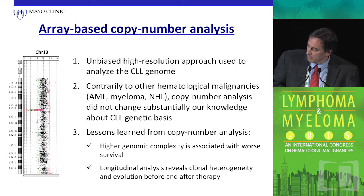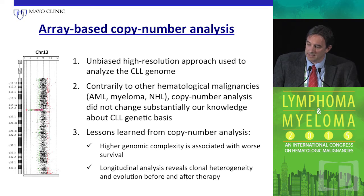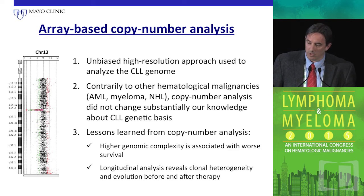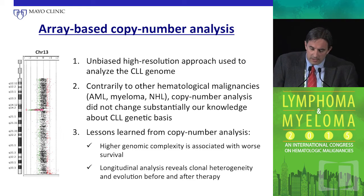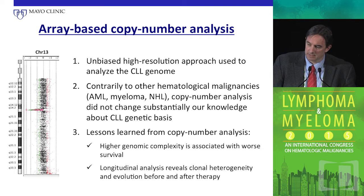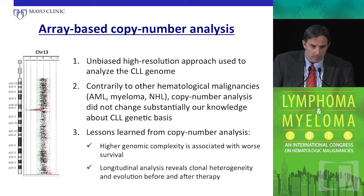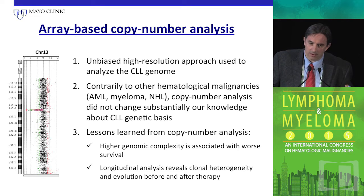We were very excited when we started working with array-based approaches — the first unbiased method for analyzing the genome. I have to say we were a little disappointed with the results compared with other human malignancies and solid tumors where we identified key pathways and genes. That wasn't the case in CLL. Our knowledge about the basics of the CLL genome didn't change dramatically compared with FISH. But we learned important lessons: for the first time analyzing the whole genome at high resolution, we understood that genomic complexity is very important, and we began understanding clonal heterogeneity and clonal architecture over time.